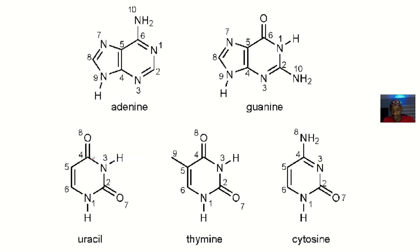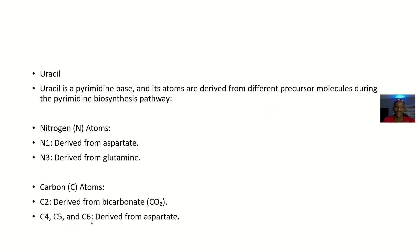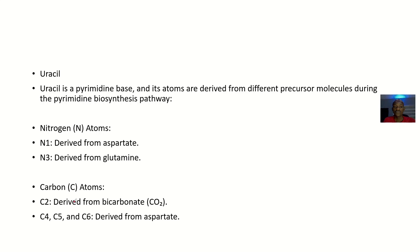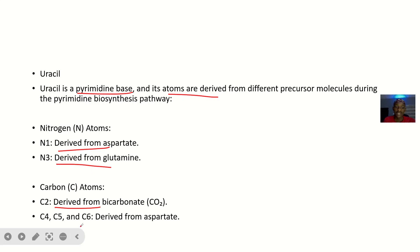Now let's move to uracil. I always tell people that almost every biochemistry structure has two ways of drawing it, so just find one way and work with it. Uracil is a pyrimidine base; its atoms are derived from different precursor molecules during the pyrimidine biosynthesis pathway. N1 is derived from aspartate, N3 is derived from glutamine. For the carbon atoms: C2 is derived from bicarbonate, and C4, C5, and C6 are derived from aspartate.